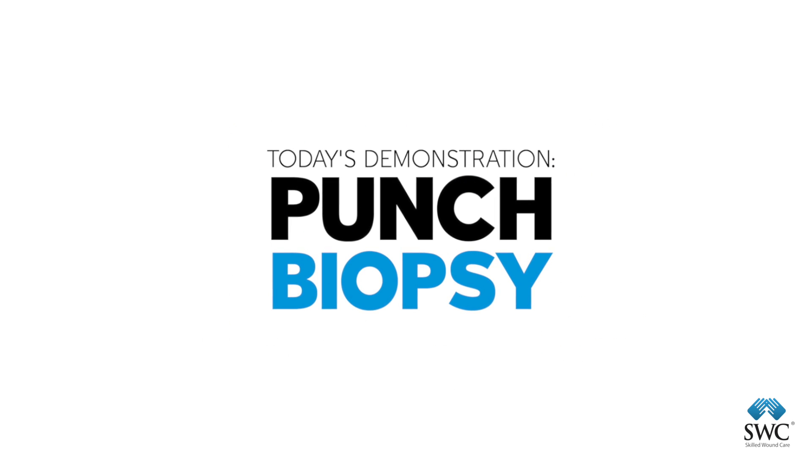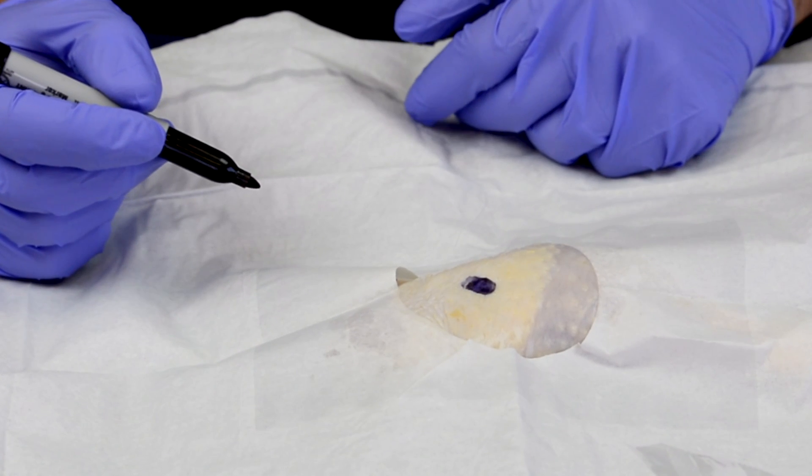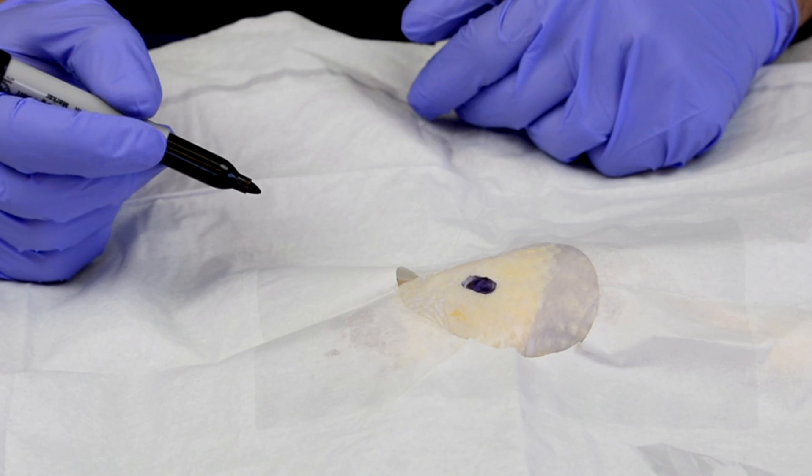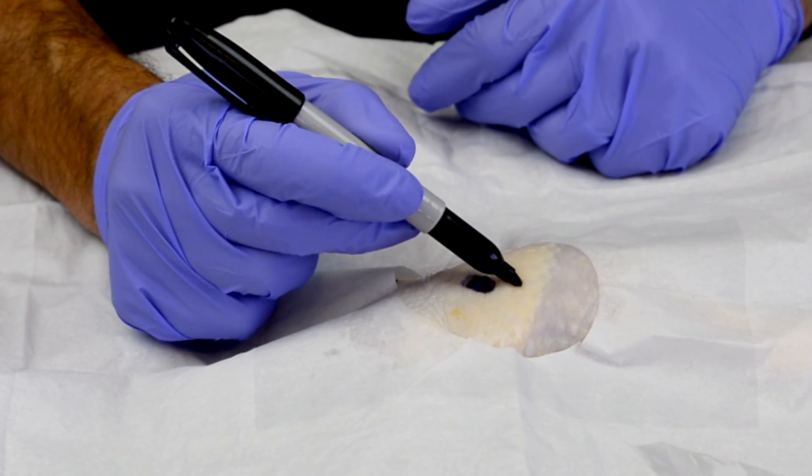We're going to be demonstrating a punch biopsy. The first thing you want to do is identify the lesion that is suspicious for cancer and outline it for the punch biopsy.